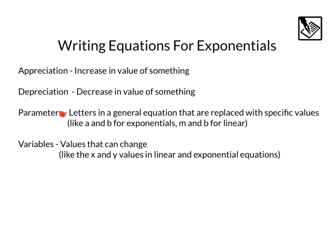Parameters and variables. Parameters are basically letters in general equations that are replaced with specific values, like a and b for exponentials, or the slope and y-intercept m and b for linear equations. Variables, these are values that can change. For our exponential and linear examples, this would be the x and y points. There's lots of x, y values that can go on an exponential function or a line.